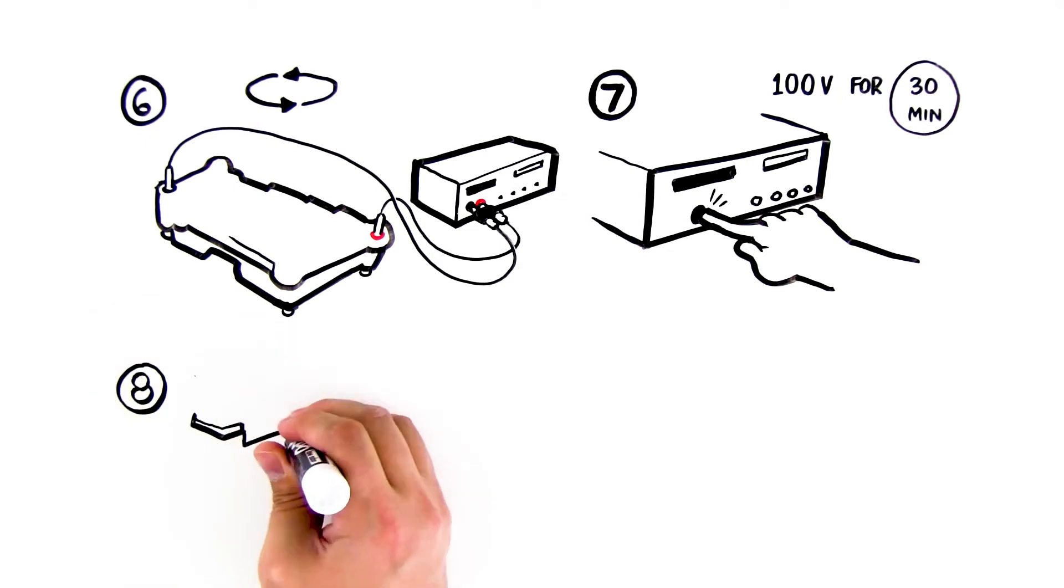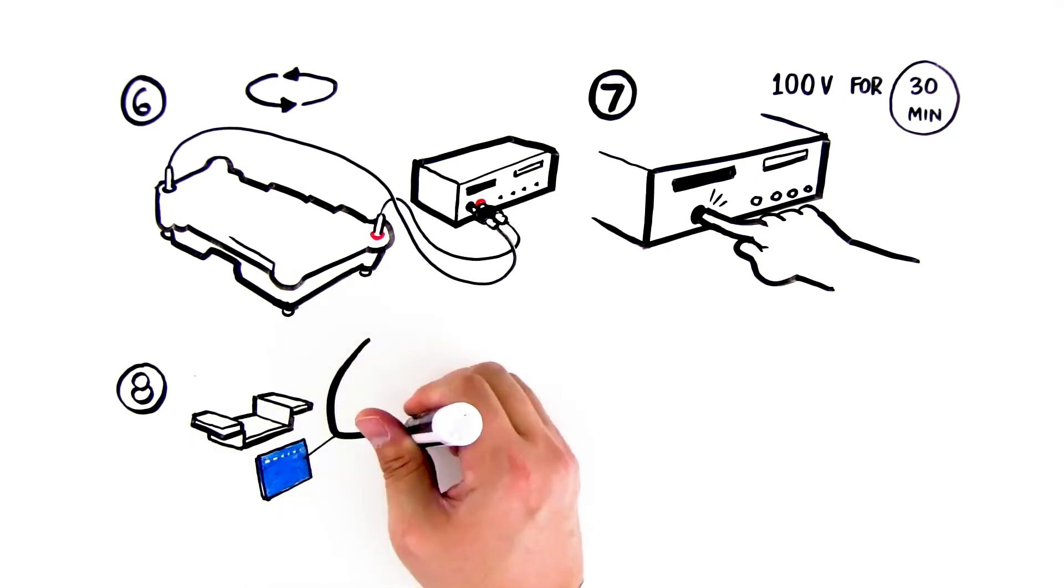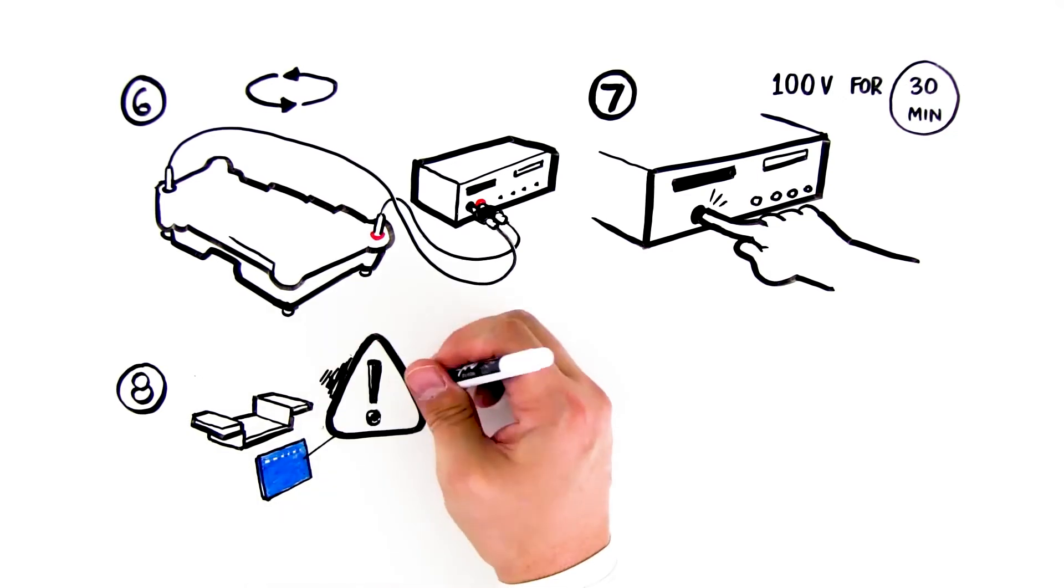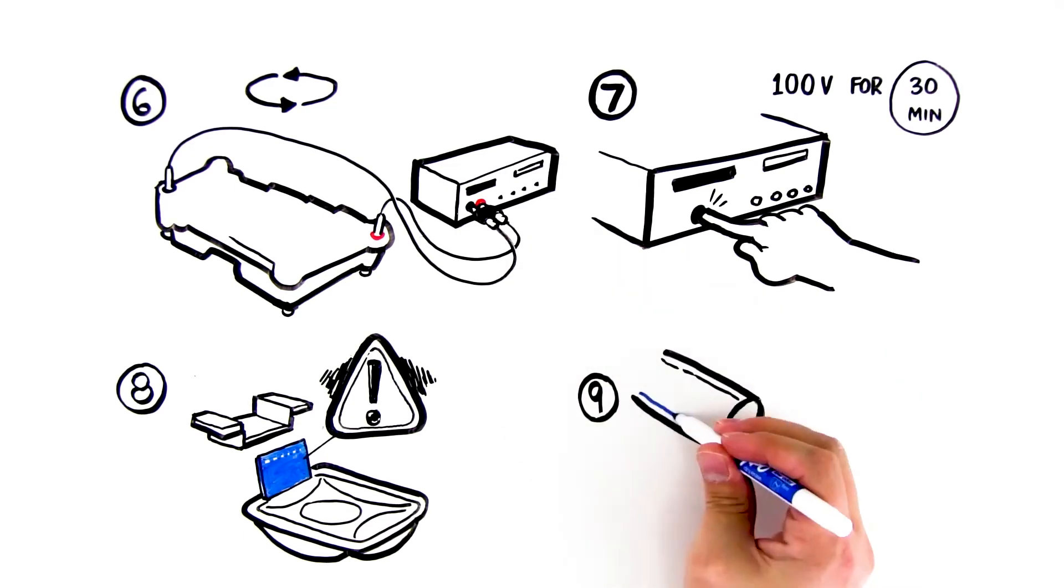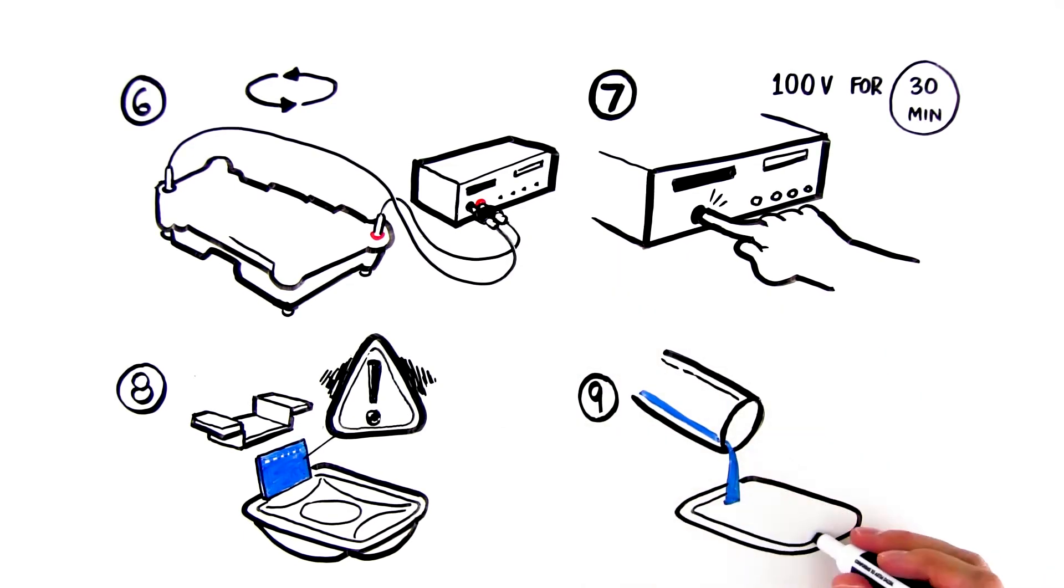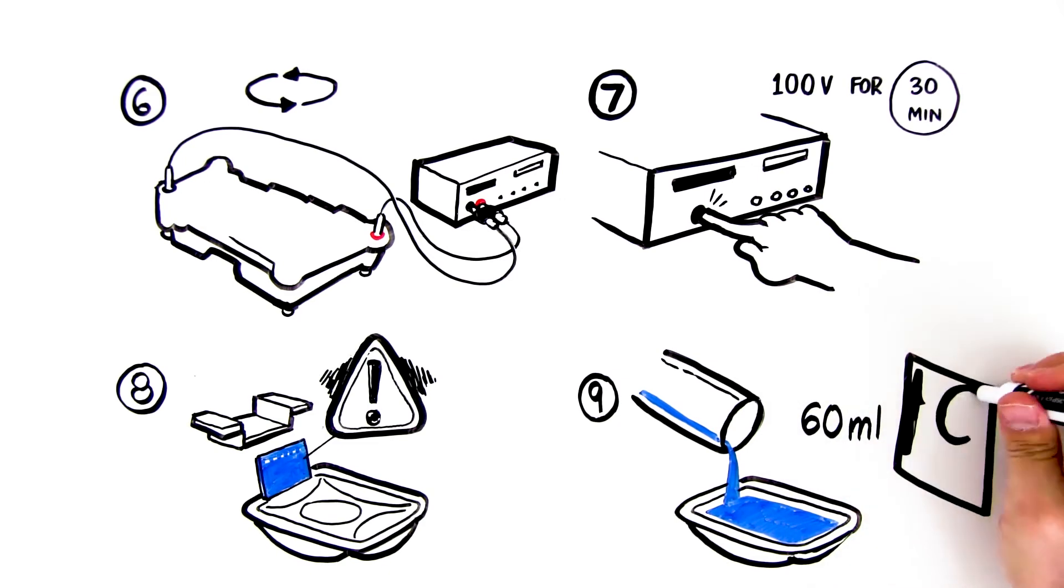Eighth, when the electrophoresis is complete, turn off the power and remove the top of the gel box. Ninth, carefully remove the gel and tray from the gel box. Be careful, the gel is very slippery. Slide the gel into the staining tray. Add 60 milliliters of DNA stain to the tray. Cover the tray with plastic wrap. Let the gel stain overnight, with shaking for best results.